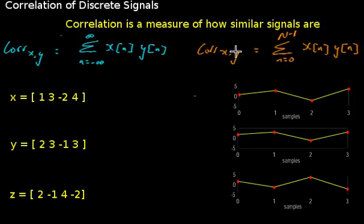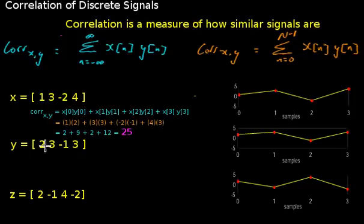It can be used as an automatic way of determining whether signals are similar or not without having to plot them. So what I want to do is just run through how do we calculate the correlation measurement between X and Y first of all, and then I will run through how to calculate the correlation measurement between Y and Z using this expression up here. So let me just show you those calculations first of all.